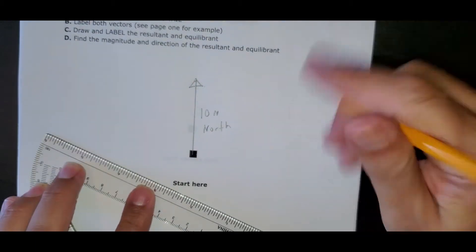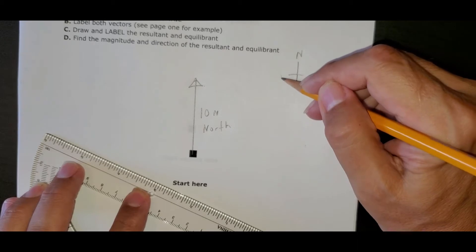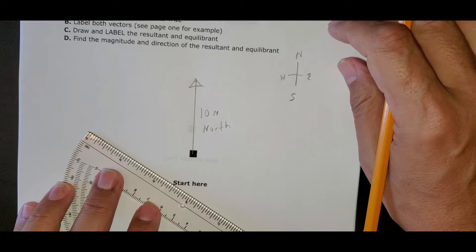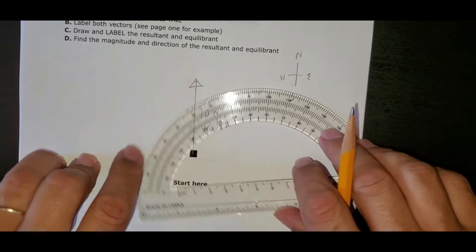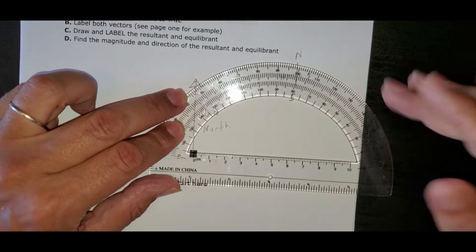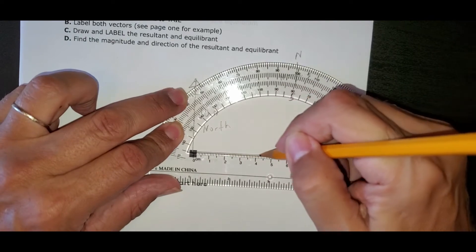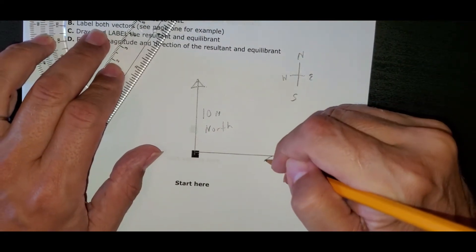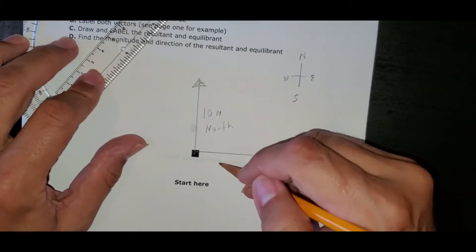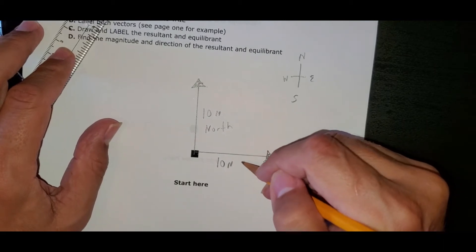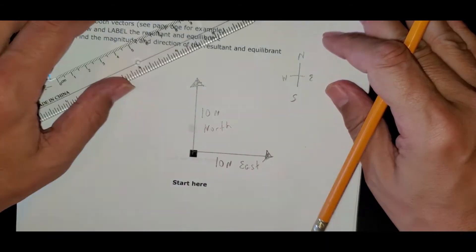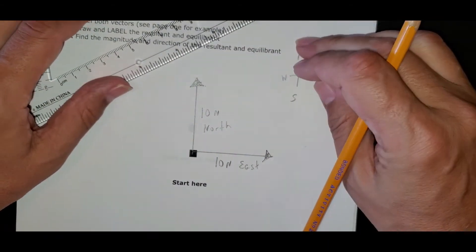The other force is 10 newtons east, and east goes to the right. It's north, west, east, south. So 10 newtons east, that's also five centimeters because each centimeter represents two newtons. Working from the middle, let's make sure we're really careful and go right to five and put this style arrow on it. Let's label it 10 newtons east. Notice we're working with a pencil. You've got to work with a pencil. Pencils are for pictures and plots. This is a picture.